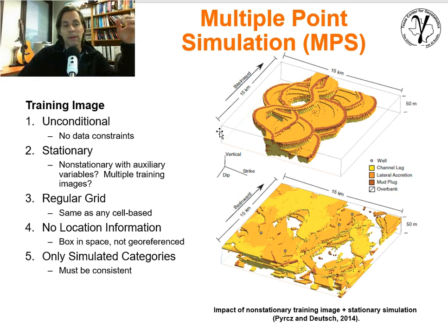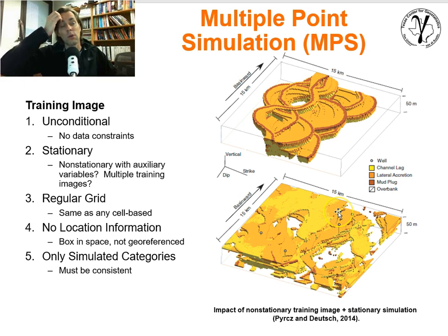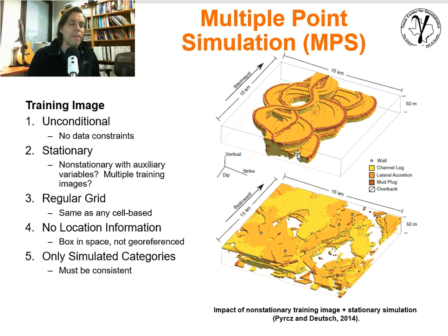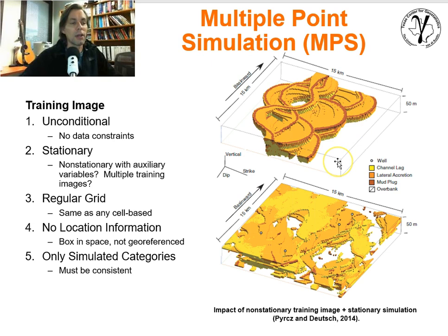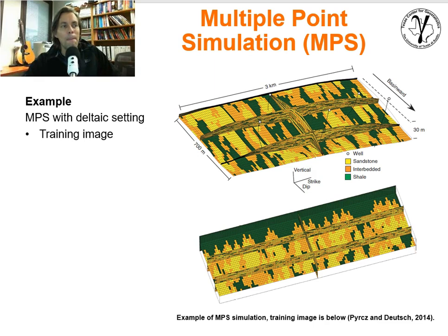There's research into other methods using auxiliary variables and so forth, but that's out of scope here. We have to be concerned about stationarity. Also, there's no location information within the training image — you can't assign a coordinate from the training image to a specific location in the actual model. The fact that a training image is 15 km by 15 km by 50 m, the same as the model you're building, is coincidental. You could build a training image twice the size; the coordinates don't matter — you're just scanning for patterns. Only the simulated categories should be present in the training image; encountering unknown facies during scanning causes confusion.